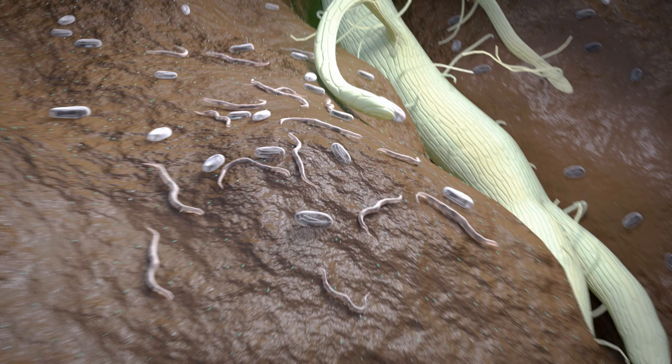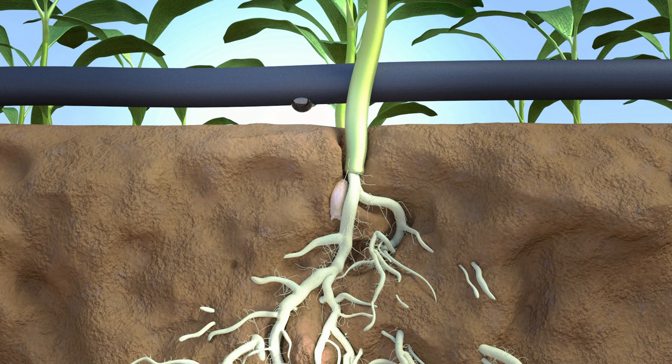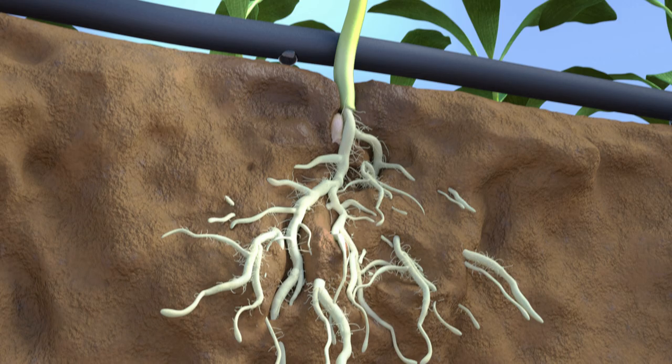Treated nematodes rapidly become paralyzed and remain needle-shaped until they die off. After Fluopuram has been applied, Bayer's biological nematocide BioAct destroys the remaining nematode eggs.